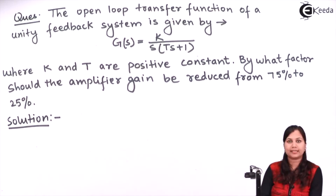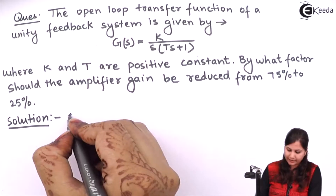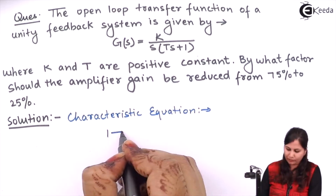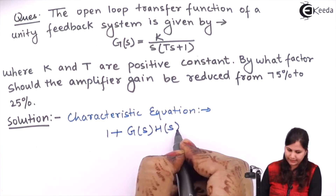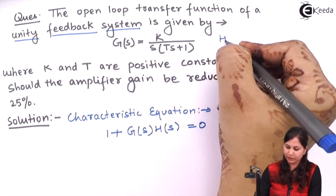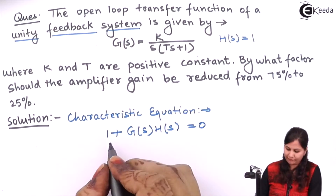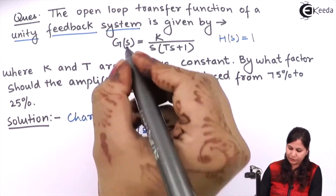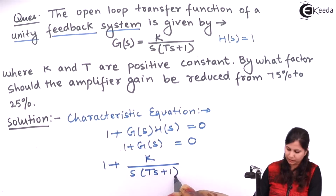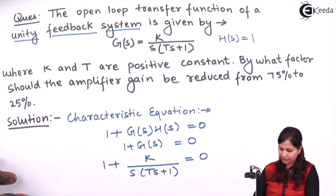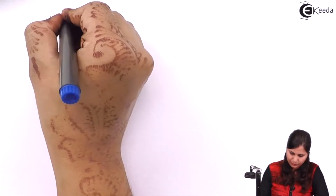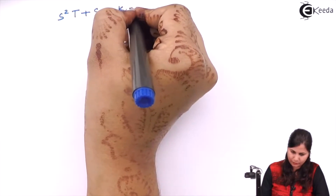First we will find out the characteristic equation of this system. The characteristic equation is given by 1 + G(s)H(s) = 0. Since we have a unity feedback system, H(s) = 1. So we will have 1 + G(s) = 0. Substituting the value of G(s), we get K / (s(Ts + 1)) = 0, which gives the characteristic equation as Ts² + s + K = 0.